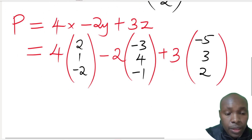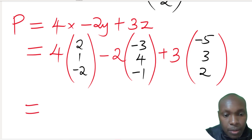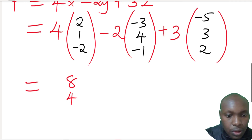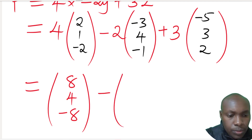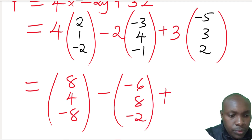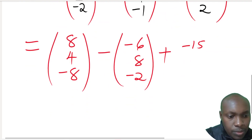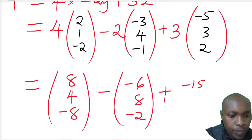We open the brackets by multiplying everything inside. For 4 times (2, 1, -2): we get 8, 4, -8. For 2 times (-3, 4, -1): we get -6, 8, -2. For 3 times (-5, 3, 2): we get -15, 9, 6.